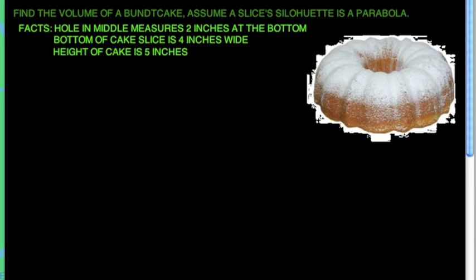So if I were to take a slice of the cake, if I were to cut here and here, this piece that I took out would look something like this. And the slice of silhouette being a parabola just means that this curve right here is a parabola.